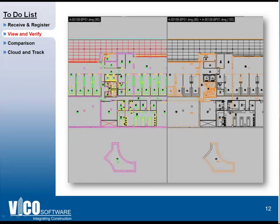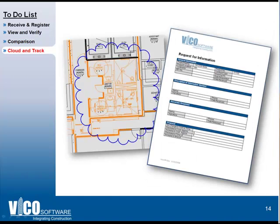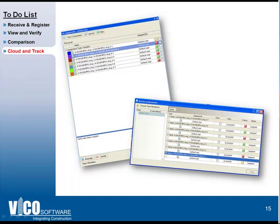Next step on the to-do list: view and verify. We'll use DocSetManager to view the drawings you've received and run a comparison between the drawings you want to check. After that, we'll go through and add any clouds that DocSetManager found to be missing, and any areas of concern we want to keep track of or create an RFI from. Once you start to make your clouds, you might find a couple on one sheet and a couple more on the next, and they start to add up.